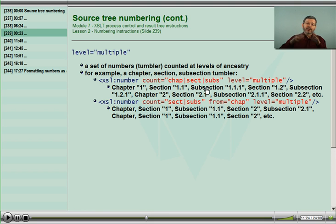This goes all the way up to the top of the tree in the ancestry. If I want to limit that, I can use the from. Give me a count of sections and subjects, but stop looking when you hit the chapter. So don't go up beyond the chapter. Every time I hit a new chapter, it restarts the section counting at 1.